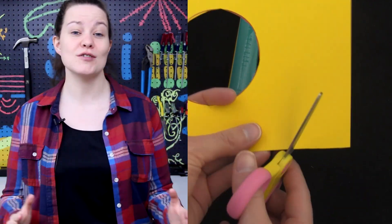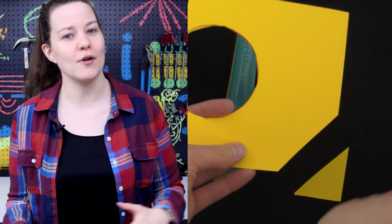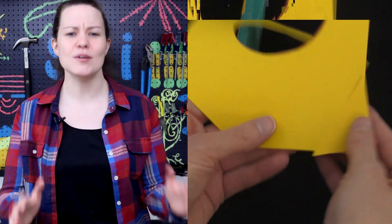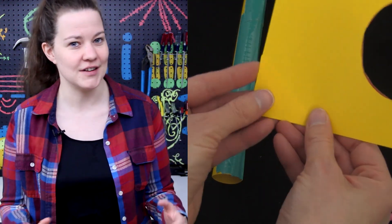For the last step of the rocket, we need to add fins, and we can do this by cutting out triangles. Usually, you add three to four fins, but you can be creative. Some people even add multiple sets of fins to their rockets.